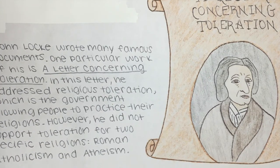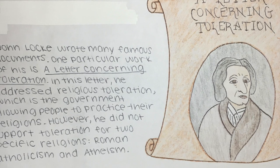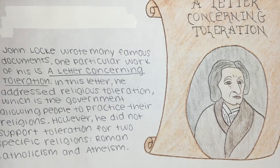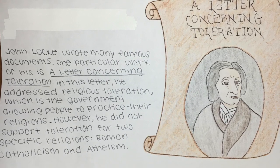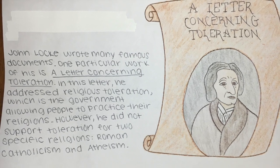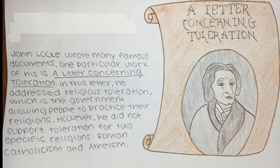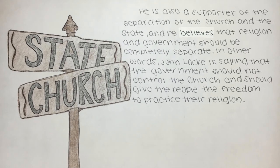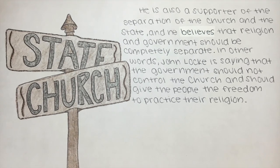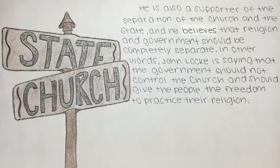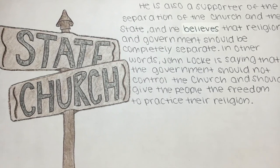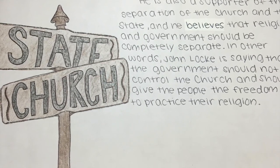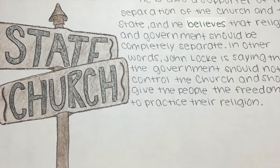John Locke wrote many famous documents. One particular work is A Letter Concerning Toleration. In this letter, he addressed religious toleration, which is the government allowing people to practice their religions. However, he did not support toleration for two specific religions: Roman Catholicism and Atheism. He is also a supporter of the separation of church and state, and he believes that religion and government should be completely separate. In other words, the government should not control the church and should give the people the freedom to practice their religion.